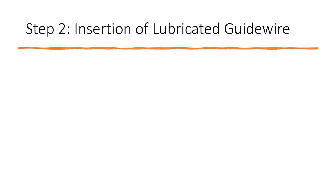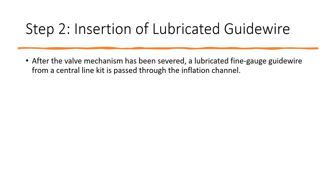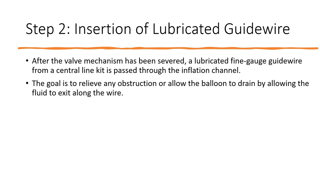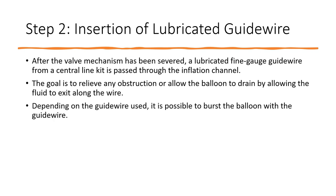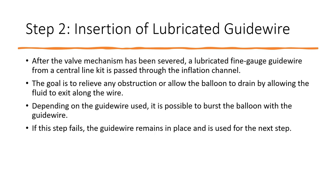Step 2: Insertion of a lubricated guide wire. After the valve mechanism has been severed, a lubricated fine-gauge guide wire from a central line kit is passed through the inflation channel. The goal is to relieve any obstruction or to allow the balloon to drain by allowing fluid to exit along the wire. Depending on the guide wire used, it may be possible to burst the balloon. If this step fails, the guide wire remains in place for the next step.